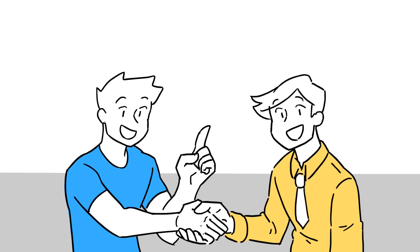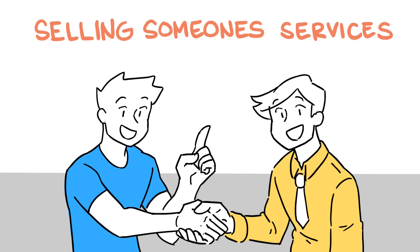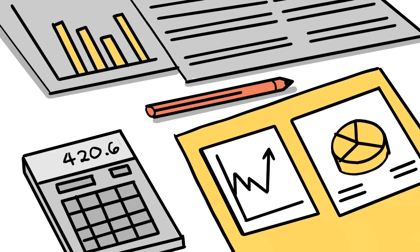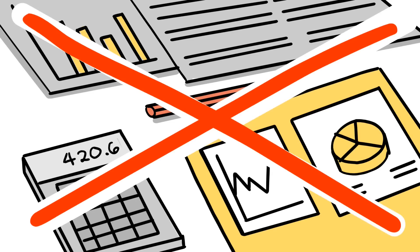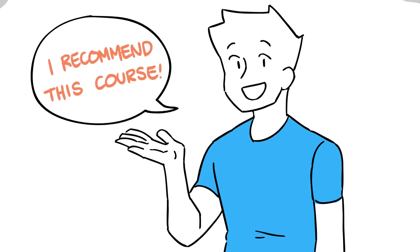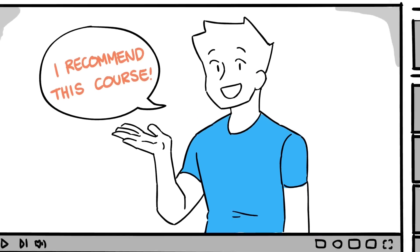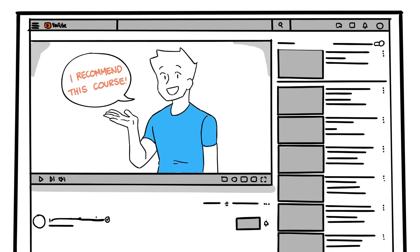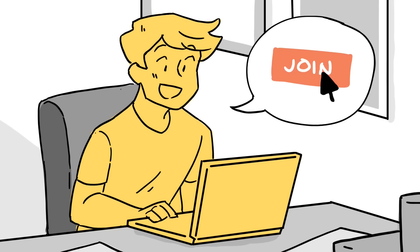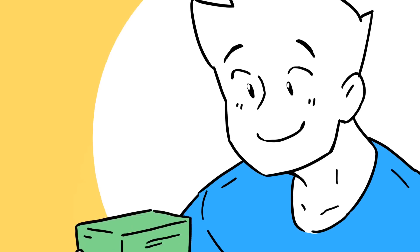Next, we have selling someone else's product or services, also known as affiliate marketing. This is easier to do than selling your own products because you don't have to make, manage, or do any sort of maintenance — all you have to do is sell someone else's creation. I do this frequently on this channel; I promote other courses that I've gone through and believe in, and for every person that decides to join via my recommendation, I get paid a commission.